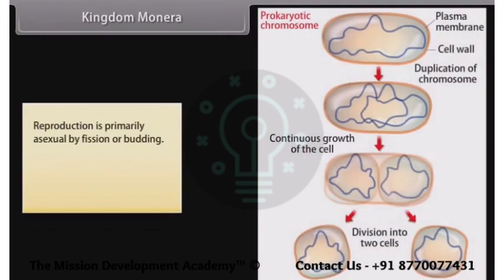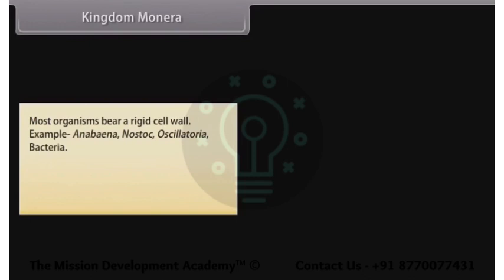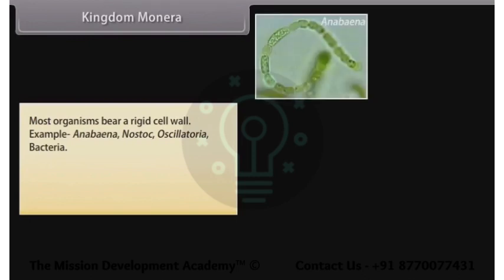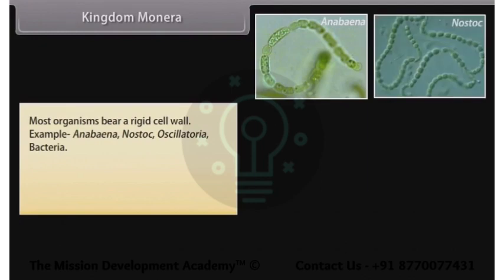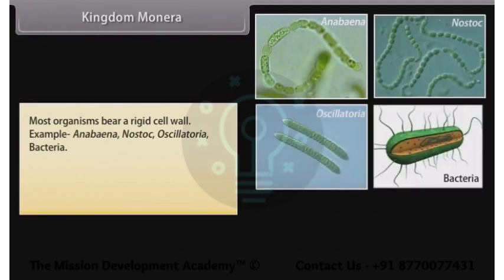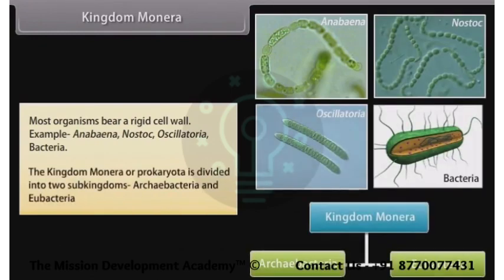Reproduction in Monera is primarily asexual by fission or budding; protosexual phenomena also occur. Most organisms bear a rigid cell wall. Examples include Anabaena, Nostoc, Oscillatoria, and Bacteria. The kingdom Monera, or Prokaryota, is divided into two sub-kingdoms: Archaebacteria and Eubacteria.